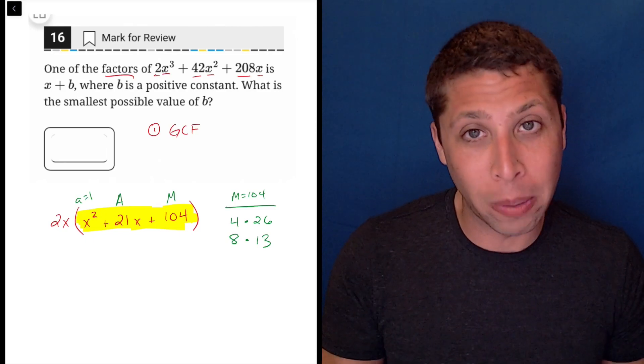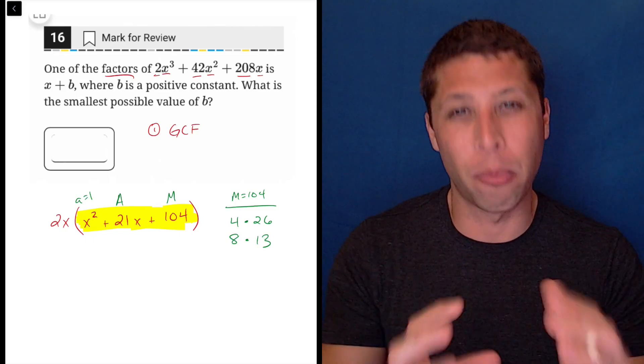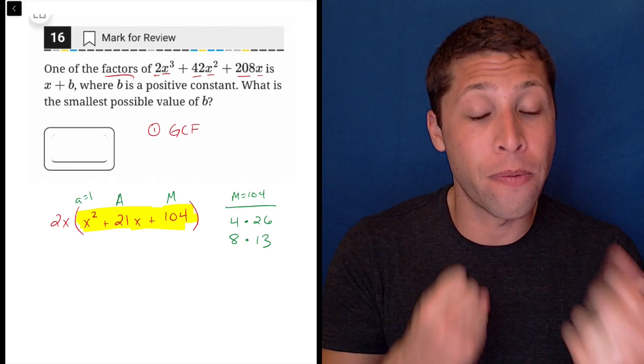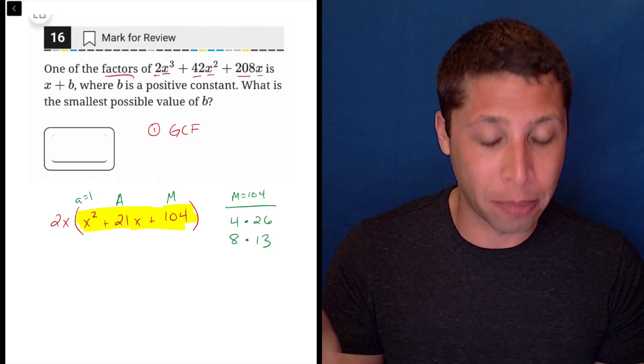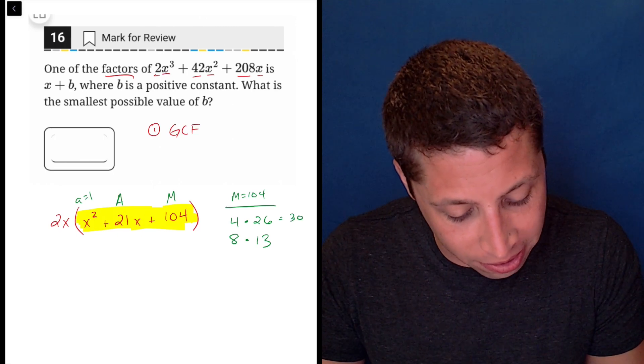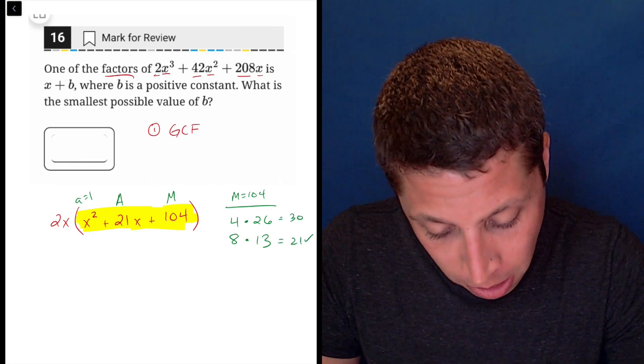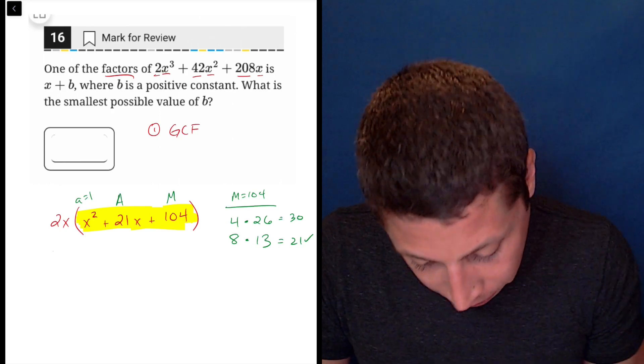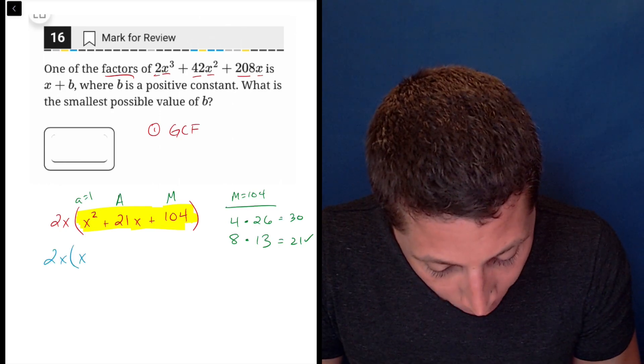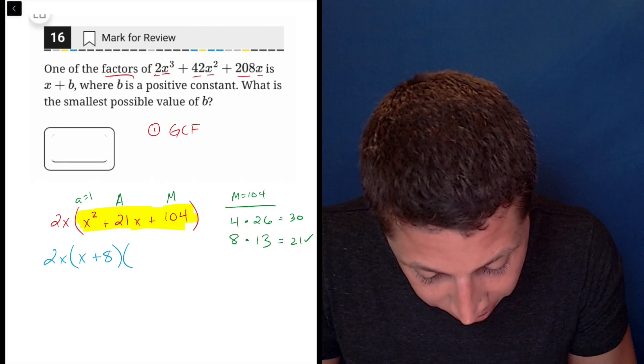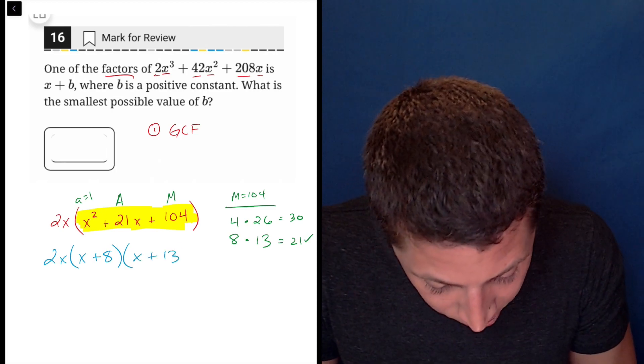I was checking the multiplication because that's the piece with more limited options. Once I have the two factors of 104, I add them together. 4 plus 26 is 30. 8 plus 13 is 21. So that's my option. Now we factor this thing again: x plus 8, x plus 13.